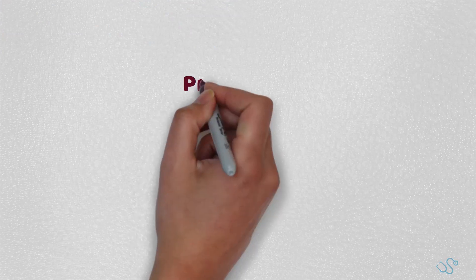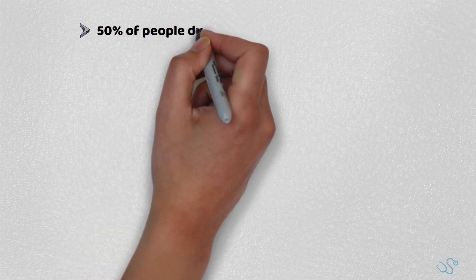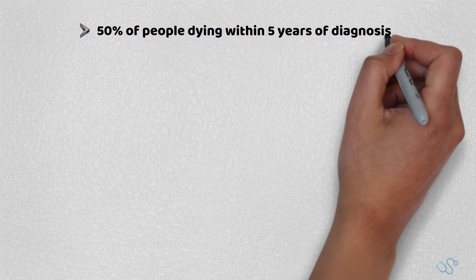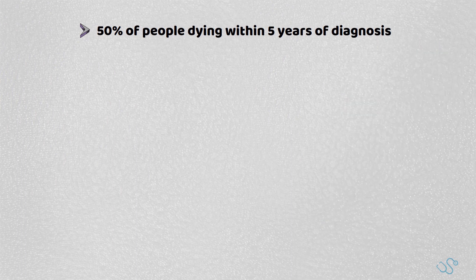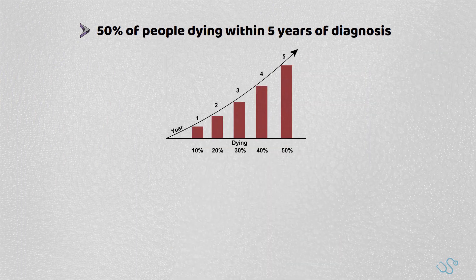The prognosis of heart failure is variable, with NICE stating 50% of people die within 5 years of the diagnosis. However, risk factors such as the reduced ejection fraction, age and comorbidities obviously play a role.